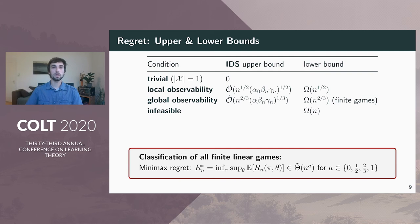With these results, we classify all finite linear partial monitoring games, showing that, as in finite partial monitoring, the optimal regret rate is either 0, one-half, two-thirds, or linear.